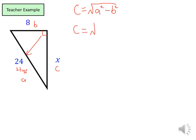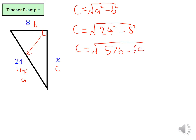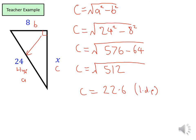We substitute the values into the equation: C equals the square root of 24 squared minus 8 squared. So C equals the square root of 576 take away 64, which is the square root of 512. That gives an answer of C equals 22.6 to 1 decimal place. Therefore, our length of X is 22.6 to 1 decimal place.